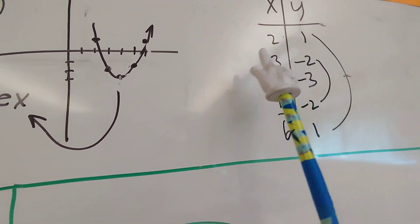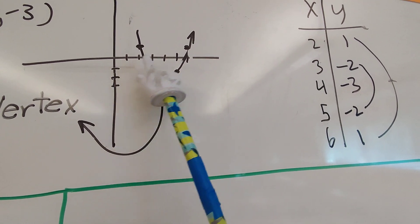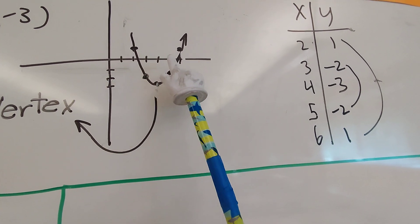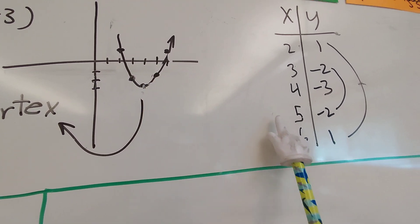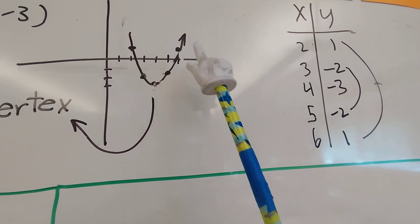And now let me graph those points. First is the vertex. 4, negative 3. Let me go to 5, negative 2. It's actually 5, down negative 2. And then 6, up 1. This is the right side of the graph.